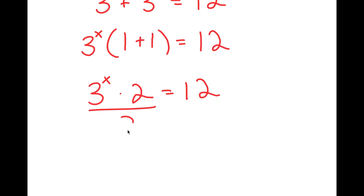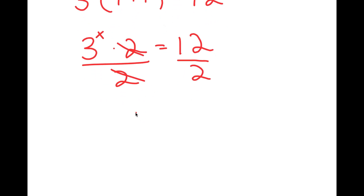Now I can divide both sides by 2, so these two cancel out, and I get 3 to the power of x is equal to 6.